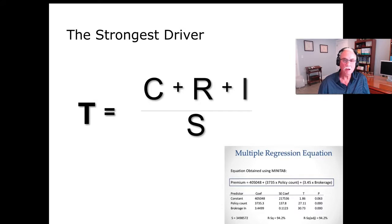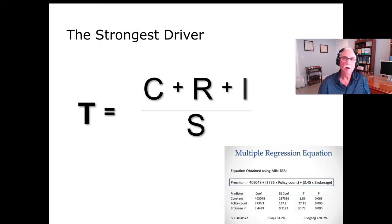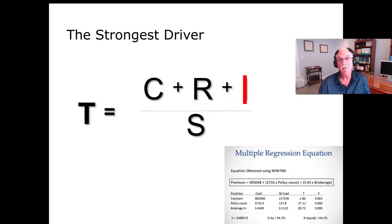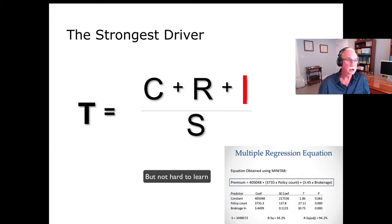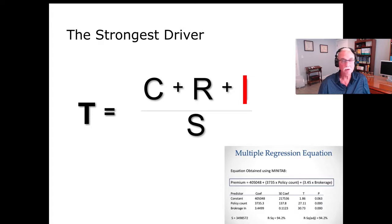We've done research and translated this into the TQ, or trust quotient — a self-assessment version of the trust equation. We actually have data. A multiple regression analysis found that the strongest driver was not what we originally thought — self-orientation. It turns out the strongest driver is intimacy. Most people in consultative professions aren't great at it, but the good news is it's easier to train an accountant in interpersonal skills than to train a social worker in accounting.